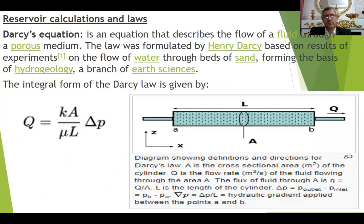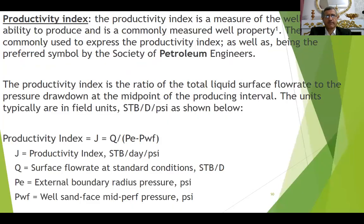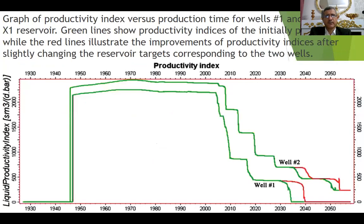Then reservoir calculations and laws. This is the Darcy equation. When we have differential pressure, we can produce this quantity in barrels per day. Then productivity index PI — the relationship with differential pressure: Q over delta P, in barrels per day per psi or stock tank barrels per day per psi. Here we have a graph of productivity index for two wells — well number one and well number two.